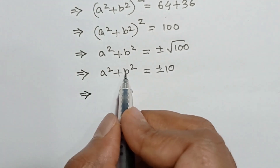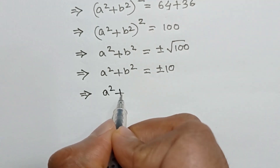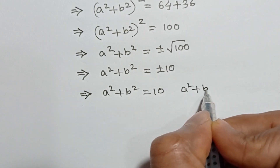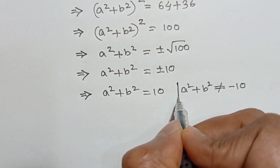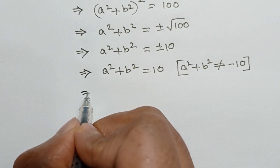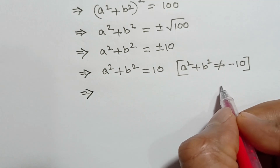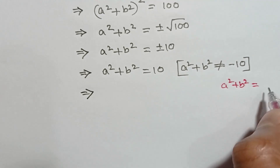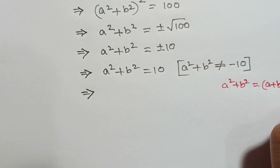But the sum of squares of two numbers cannot be negative, so a squared plus b squared is equal to 10, and the value negative 10 is rejected. Now we apply another formula: a squared plus b squared is equal to a plus b whole square minus 2 times ab.